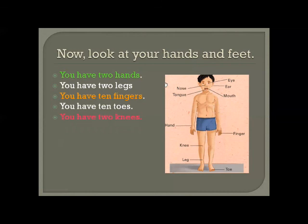You have two knees - 1 and 2. And we have ten toes, two legs, two hands, and ten fingers: five fingers on the left hand side and five fingers on the right hand side.